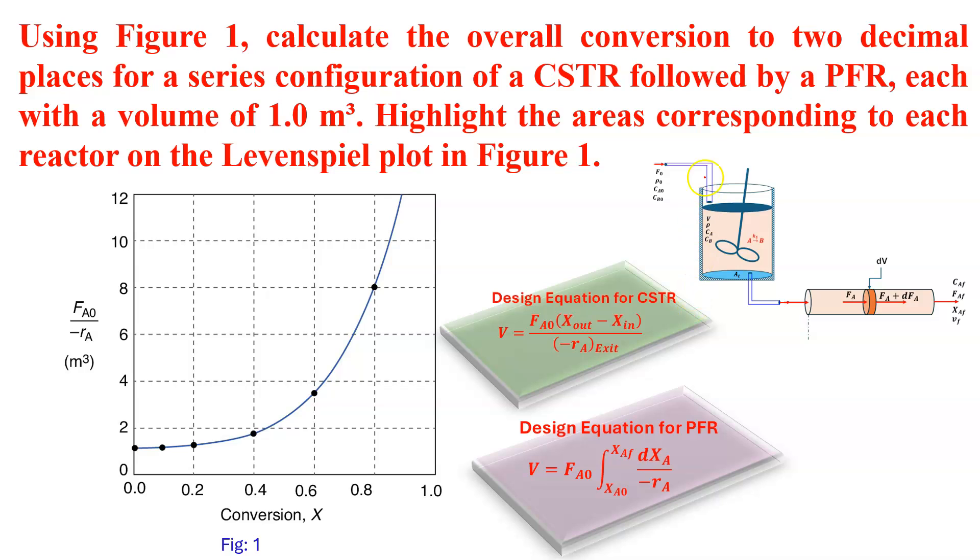In the configuration, first CSTR, this is CSTR and PFR in series and both reactors have the same volume, that is 1 meter cube. Suppose that inlet conversion X0 is 0 and outlet of that CSTR the conversion is X1, and that will be entered into the PFR with conversion X2. We have to find what will be X2. First, we have to find X1, then we have to find X2.